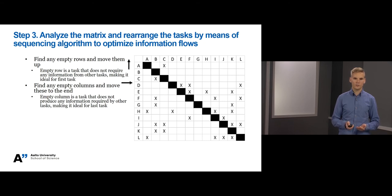In solving the design structure matrix, we rely on sequencing algorithm to optimize the information flows between tasks. The sequencing algorithm begins by identifying candidates for the earliest and latest tasks. In an ideal situation, the first task would require no information from other tasks making it a suitable candidate to start the project. Respectively, the last task would not produce any information to other tasks, making it a suitable task to finish off the project.